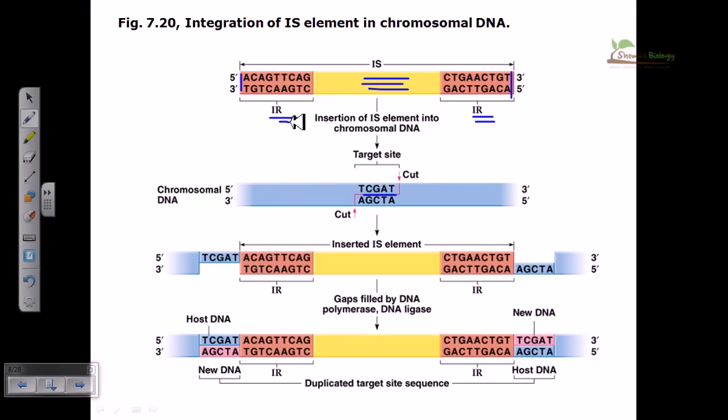These IR elements are very good at recognizing the target site, and they code for the enzyme transposase. Remember, this transposase is a multifunctional enzyme because IS elements generally cannot code for other proteins. IS elements code for transposase which helps cleave them and attach them into the target site.